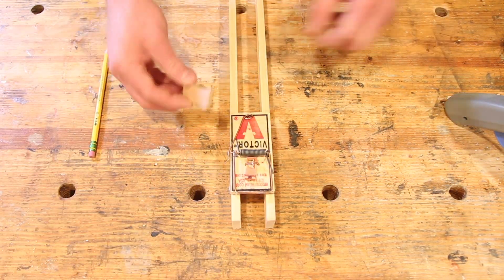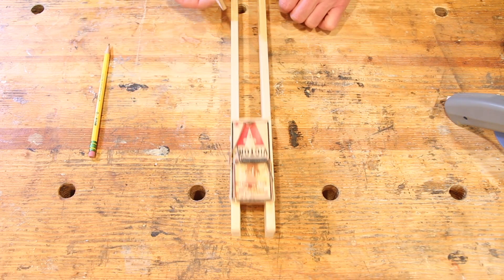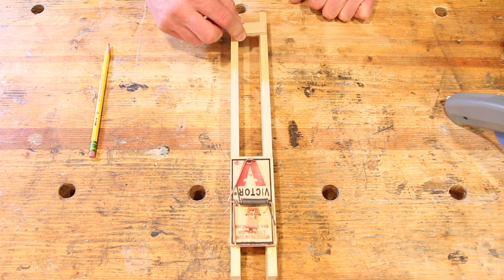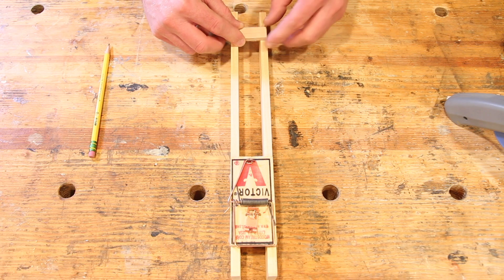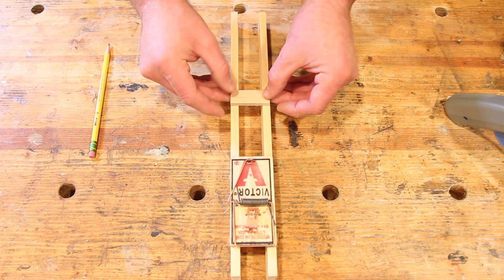Next thing we're going to glue is this stabilizer piece towards the center of the mousetrap. You don't want it over here on the end or it will get in the way of the string. So we're going to put it about in the middle.